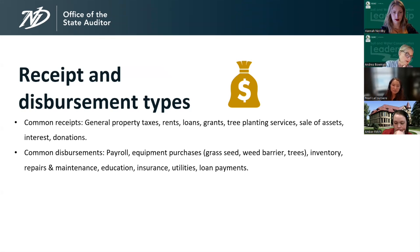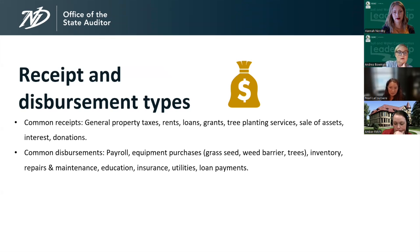On the disbursement side, common disbursements include payroll, equipment purchases such as grass seed, weed barrier, trees, inventory, repairs and maintenance, education, insurance, utilities, and loan payments. Most other expenses for a district will be miscellaneous and belong in the general government all-other section.